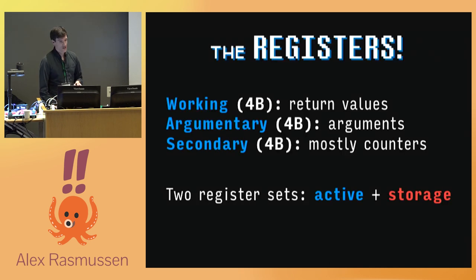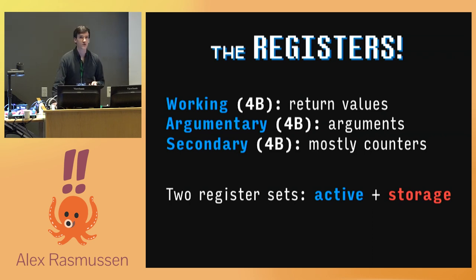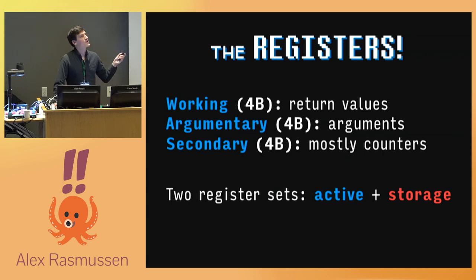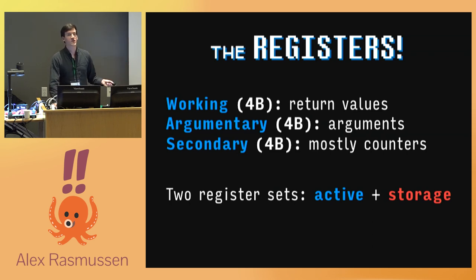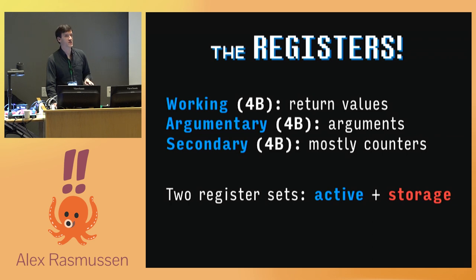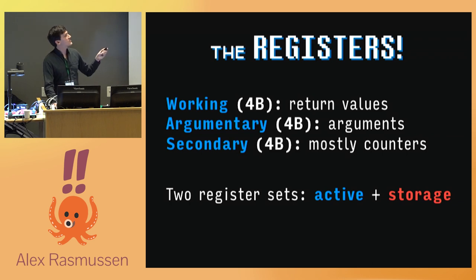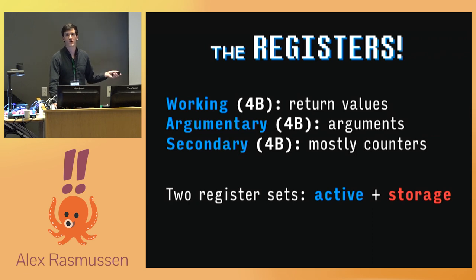Let's start with the registers. EarthBound's register set is very modest — it has three of them. There's a four-byte working register usually used for storing return values. There's a four-byte argumentary register used to pass arguments; if you set that byte to zero, many instructions will just read the contents of the argument register. And there's a two-byte secondary register mostly used for loops and counters. There are actually two sets of these three registers — an active set and a storage set — and special instructions in the ISA can swap them between one another.